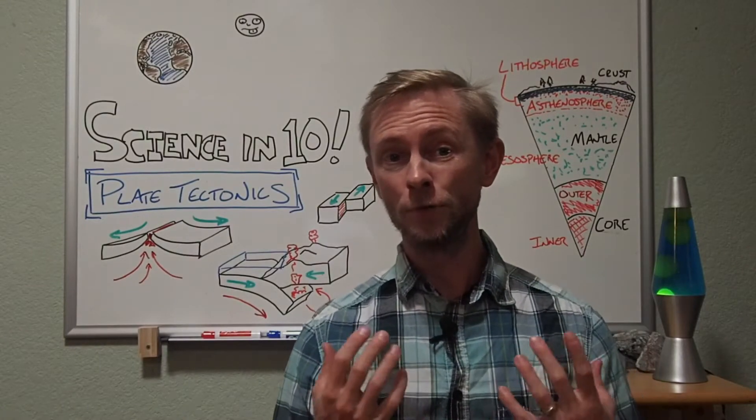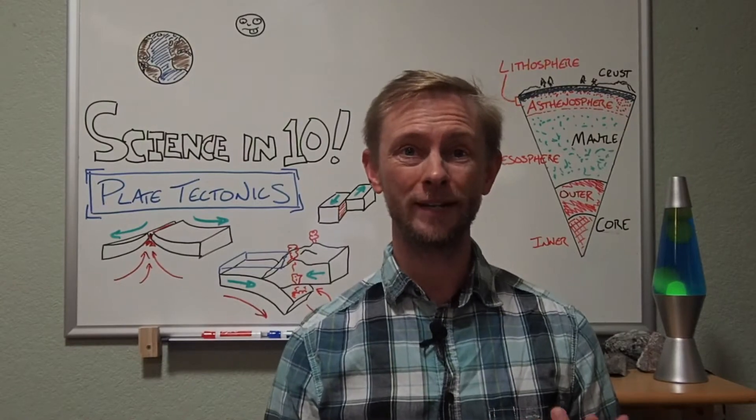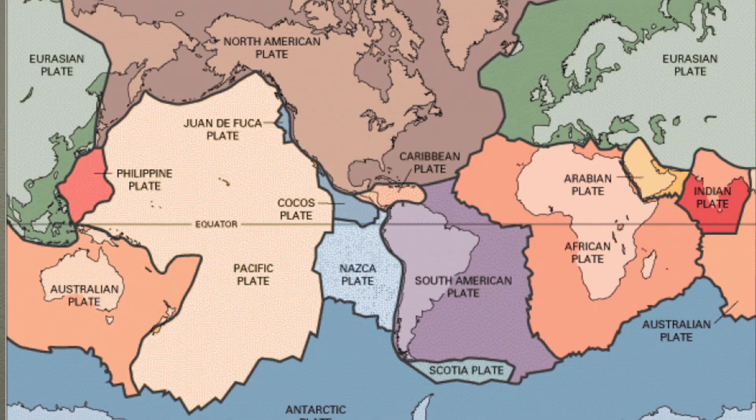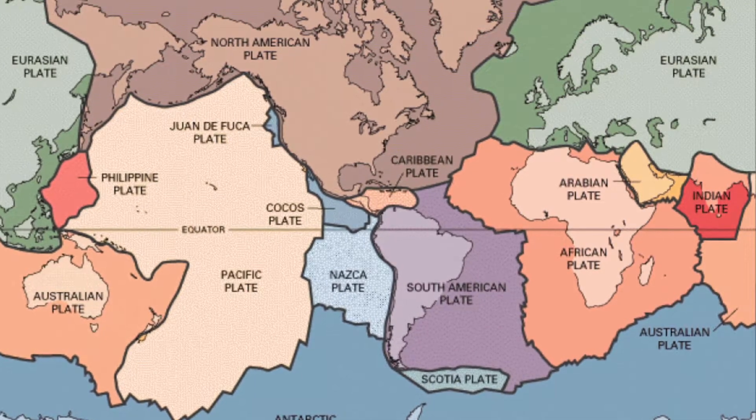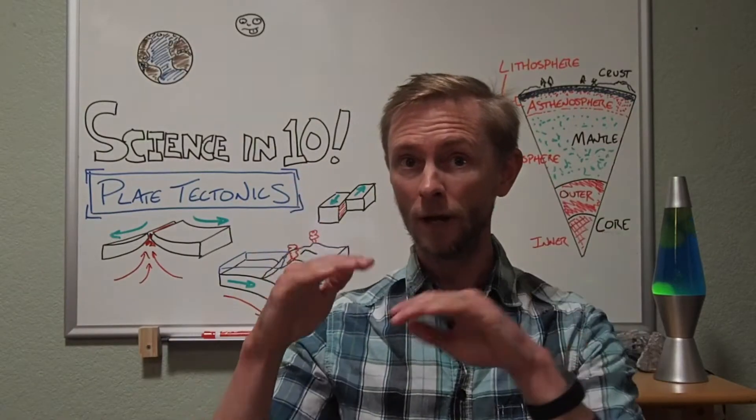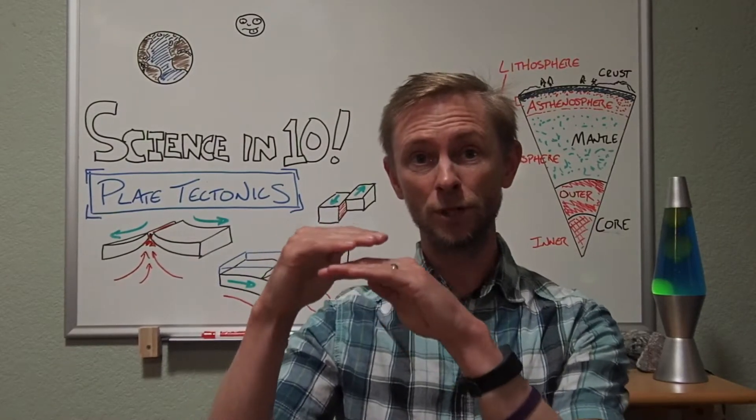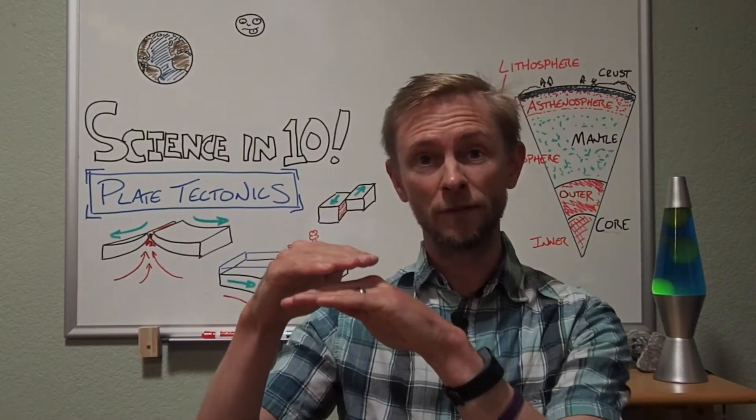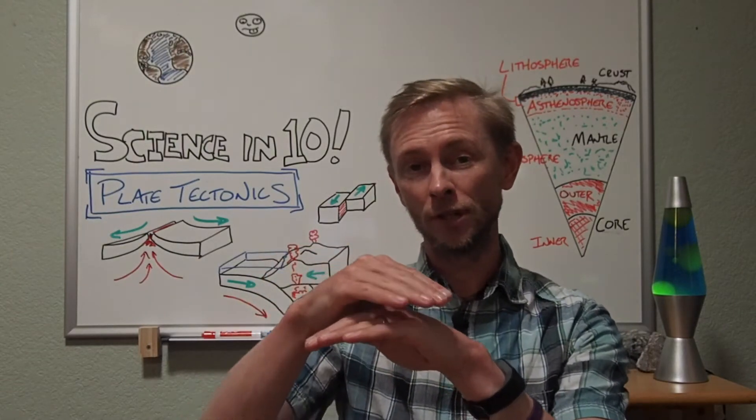So coming back to plate tectonics, the central tenet behind this whole idea is that the lithosphere is broken into numerous rigid pieces known as plates. These plates float on top of the denser asthenosphere. And since the asthenosphere is mushy, these rigid lithospheric plates can slide around on top of the asthenosphere over geologic time.